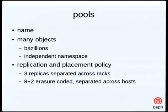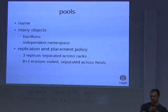Objects exist in the cluster inside an abstraction called a pool, which is a logical collection of objects within a separate, independent namespace. The main thing is that pools have basic properties associated with them — that's the replication and data placement policy. You might say this particular pool has three replicas distributed across different racks in my cluster, this other pool only has two replicas, and maybe this other pool is stored using erasure coding. The erasure coding isn't there yet — it's coming in the Firefly release in February.